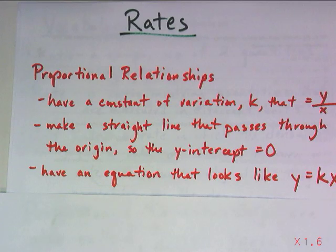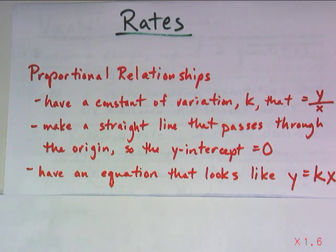Proportional relationships have a constant of variation, which we call k, that is equal to y divided by x. Proportional relationships make a straight line that passes through the origin, so in other words, the y-intercept of that line is 0. And proportional relationships have an equation that looks like y equals k times x.